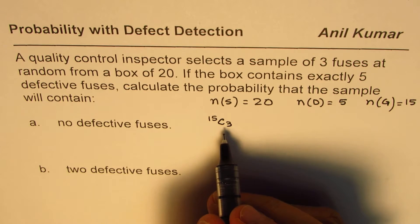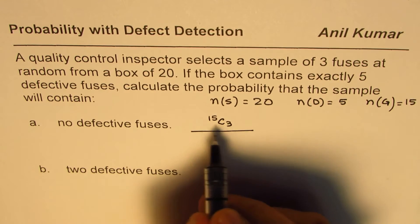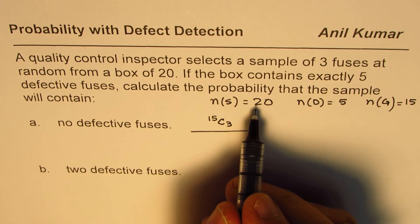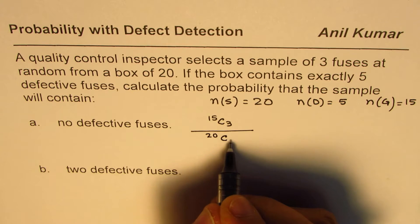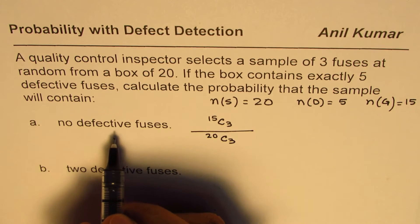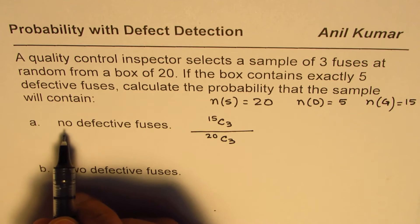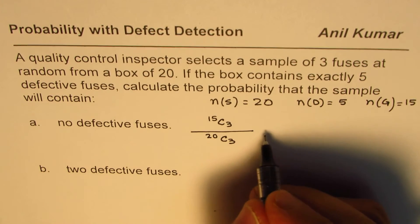And as far as the total is concerned, it will be out of 20. So out of 20, it is 20C3. So that becomes the probability of selecting no defective fuse.